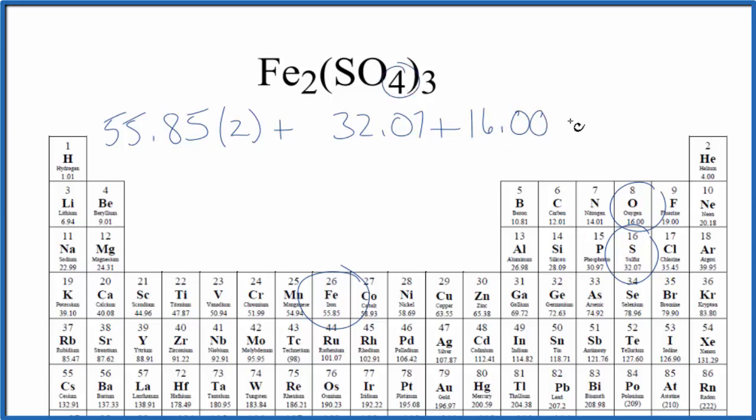We have four oxygen atoms here, multiply that by four. The three out here goes to the whole SO₄, the sulfate ion here. So we have three sulfate ions. That's these numbers right here. So what we're going to do is multiply this whole thing here by three.